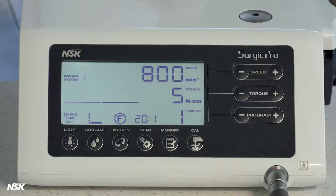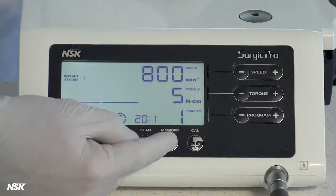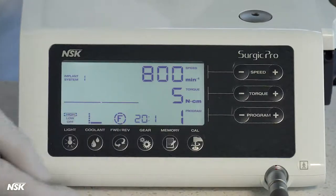Memory button is used to store the parameters of a custom setting in a program. After choosing the proper speed, torque, gear ratio, forward or reverse, and coolant flow, simply press the memory button for two seconds until you hear a beep to store the settings. You can store up to eight programs for eight different implant systems.